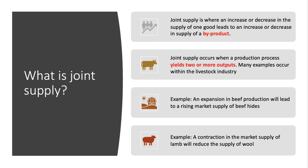There can be more than two outputs, and lots of examples occur within livestock. For example, an increase in beef production increases the supply of hide. Equally, a fall in the market supply of lamb will reduce the supply of wool.